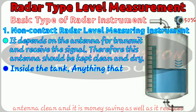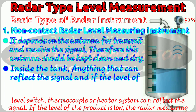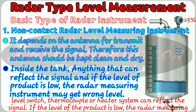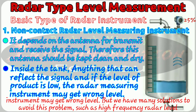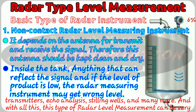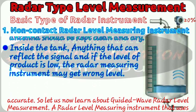Everything inside the tank such as level switches, thermocouples, or heater systems can reflect the signal. If the level of the product is low, the radar level measuring instrument may get a wrong level reading. But there are many solutions to avoid this problem, such as a high frequency radar level transmitter, echo analysis, feeling well, and many more. With all these solutions, this type of radar level measurement can be very accurate.